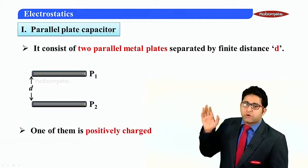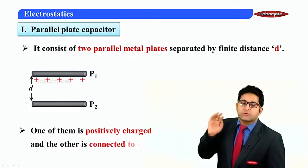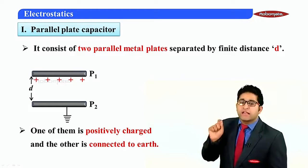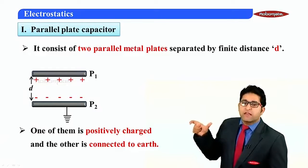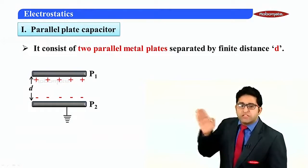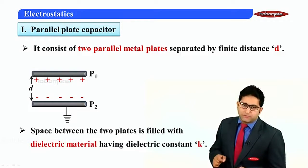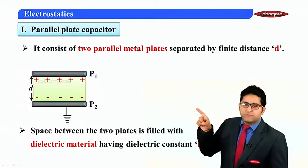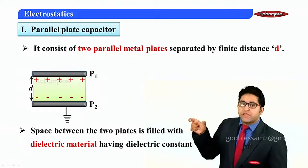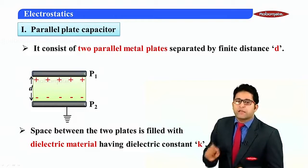In this capacitor, plate P1 is positively charged, and the outer surface of plate P2 is connected to ground. Due to this assembly, the inner surface of plate P2 acquires negative charge. The space between plates P1 and P2 is filled with a dielectric medium having dielectric constant K.